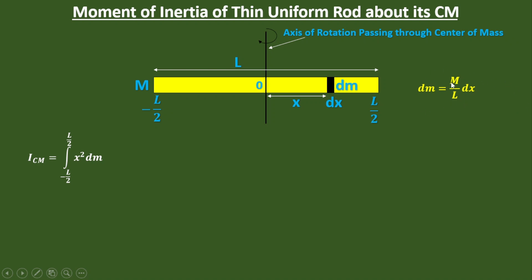Now replace it. Finally in the integration, you can take the constant term out, that is mass and the length of the rod are constant, so take it out. Now we have x squared integration inside.